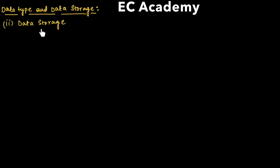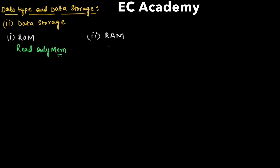Now let us understand data storage. A microcontroller consists of two types of data storage: first is ROM and second is RAM. ROM stands for read-only memory and RAM stands for random access memory.